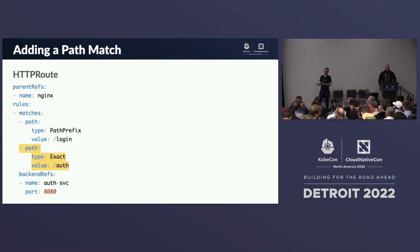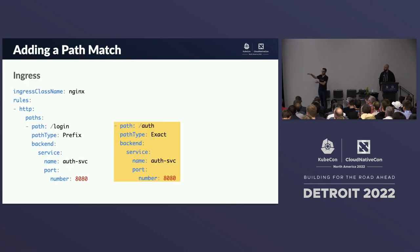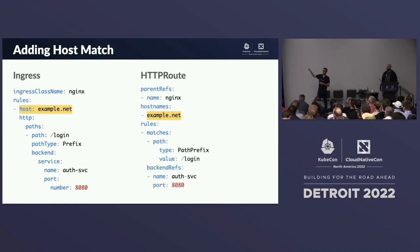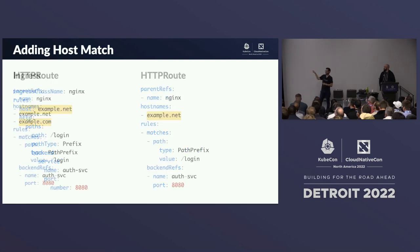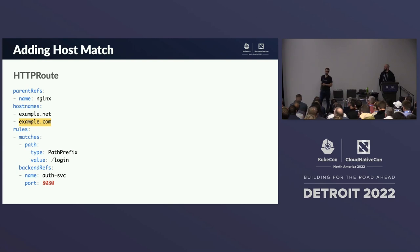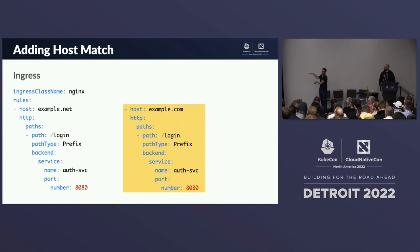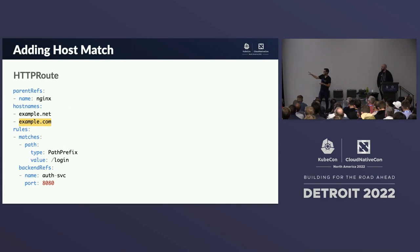Adding another path match — say an exact match on /auth in addition to the prefix /login — is straightforward in HTTPRoute with just a couple lines. The same is possible with Ingress but just a bit more verbose. Adding a host match to example.net is similar. When you try to add another host match, say example.net and example.com, HTTPRoute just adds one item to the list, whereas Ingress adds an entirely new rule.